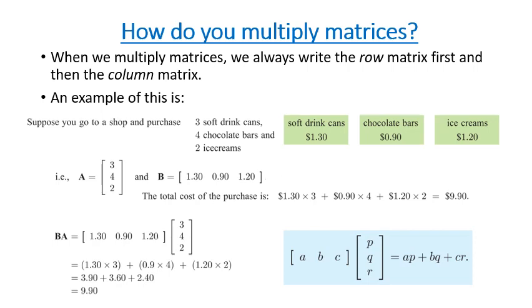So we need to understand how we multiply matrices. Now this is very similar to how we multiply normal numbers or ordinary mathematics. But the thing you need to know about matrices is we always write the row matrix first, and the column matrix second.